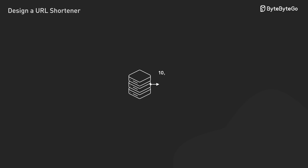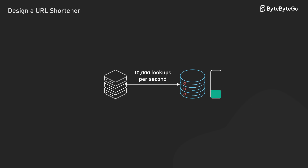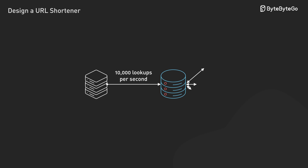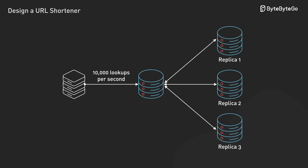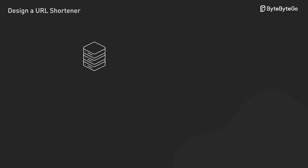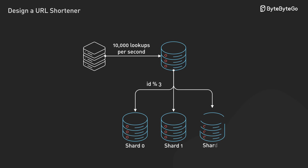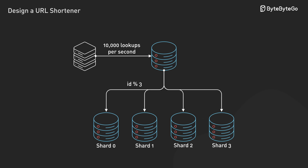But here's what makes this really interesting at scale. A single database can handle 10,000 lookups per second, so you need multiple database replicas to spread the load. Eventually you'll need to split the data across multiple databases entirely — this is called sharding, and it's another whole engineering problem. You need to figure out how to distribute data evenly, how to route requests to the right database, what happens when one database goes down, and how to rebalance when you add more servers.